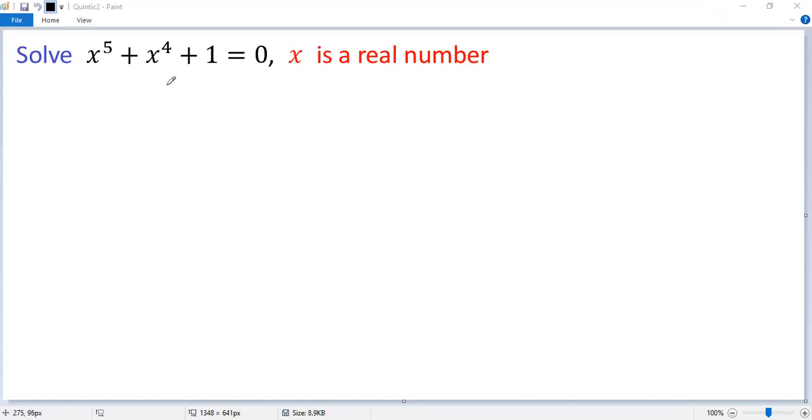How to solve a nice quintic equation? As a rule of thumb, let's factor the left side of the equation.